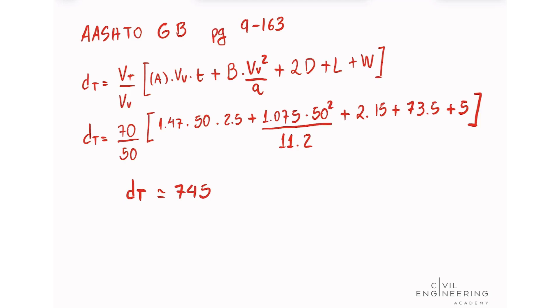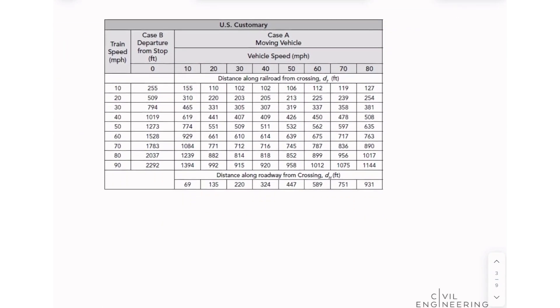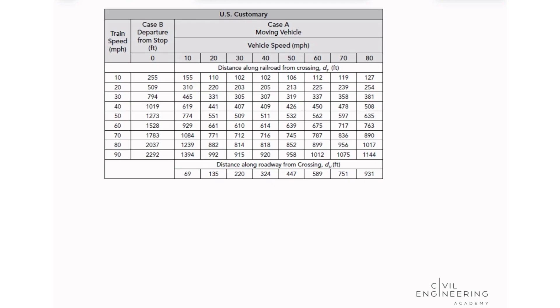There is another way that you can solve this problem, by looking at this table that I put here for you. This is table 9-29. You would have to see that this is case A because we have the case where the vehicle operator can observe the approaching train in a sight line that will permit the vehicle to be brought to a stop. You can find this description on page 9-162, and the table on page 9-167.